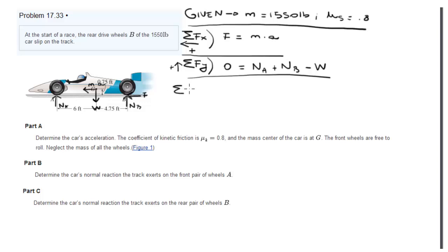And now we're going to do the sum of the moments at A, kind of clockwise being positive, which A is right here. So we're going to have W times 6 (that would be negative because it's going clockwise) plus the normal force of B times 10.75. 6 plus 4.75 equals 10.75.